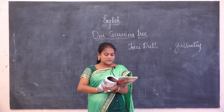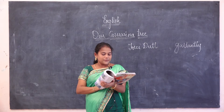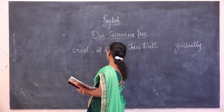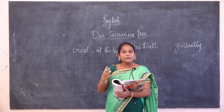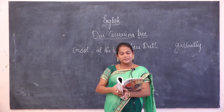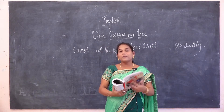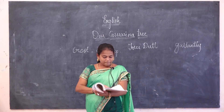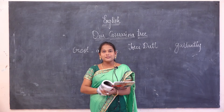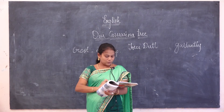Sometimes, in the winter season, on its crest — crest means at the top — a grey baboon sits statue-like alone. The baboon is a big-sized monkey. It is sitting at the top of the tree, not moving anywhere, simply sitting like a statue, all alone, watching the sunrise.